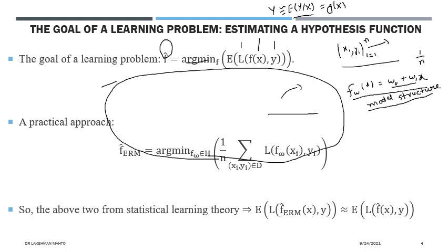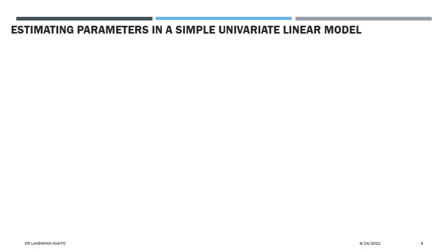The empirical loss gives an approximation of the expected loss. When you do this approximation, you have to check efficiency and consistency of the estimator. This is the general goal of any learning problem, irrespective of your branch. The empirical quantity is a practical, computable thing, and it gives an approximation of the true expectation of the loss function between the hypothesis and y.